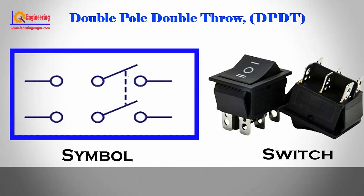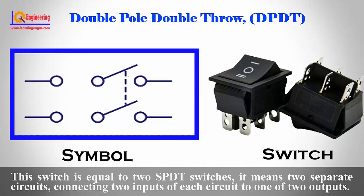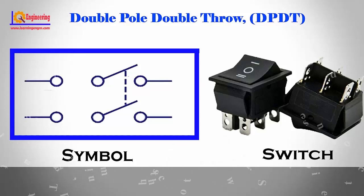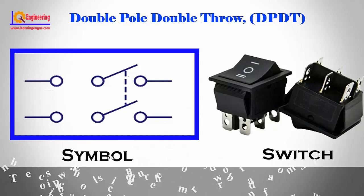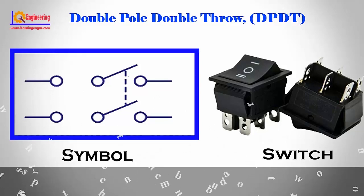DPDT — Double pole double throw. This switch is equal to two SPDT switches, meaning two separate circuits. Connecting two inputs of each circuit to one of two outputs, the switch position controls the number of ways and from the two contacts, each contact can be routed.